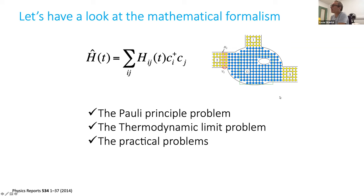We are considering a very general system made of a central part — the blue region — connected to electrodes, which are truly infinite systems. They all have their chemical potential and temperature. We have a general Hamiltonian where the time-dependent part will only be in the blue region, or possibly as a general shift of voltages in the electrode regions.